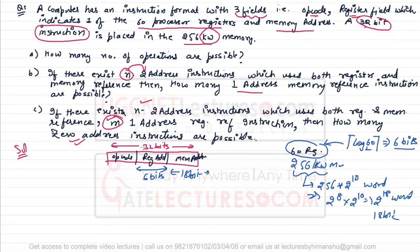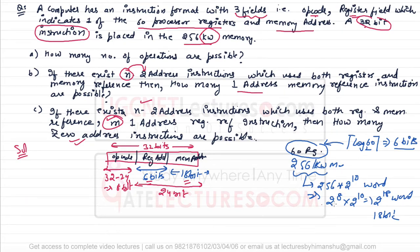The total number of bits required for address fields is 6 bits (register) plus 18 bits (memory) = 24 bits. Hence for the operation code, 32 minus 24 = 8 bits are available. The first part of the question asks how many operations are possible: with 8 bits, there are 2^8 two-address instructions possible.